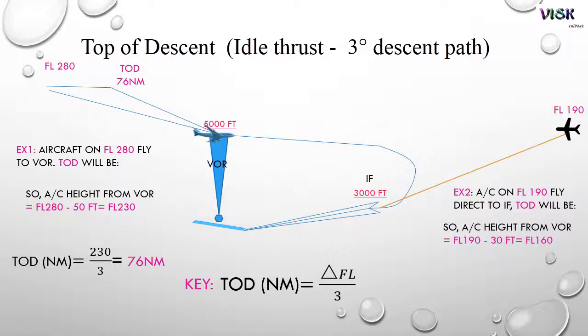Refer to number 2, we find the same. Flight level 190 minus 3000 equals flight level 160. The different altitude, refer to the formula, equals flight level 160 divided by 3 equals 53.